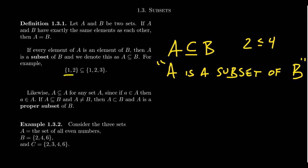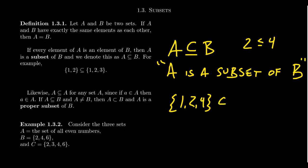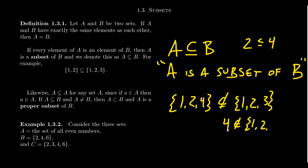Let's do an example. Let A be the set {1, 2} and B be the set {1, 2, 3}. Then A is a subset of B because every element of A belongs to B: 1 belongs to A and also to B, 2 belongs to A and also to B, and those are the only elements in A. On the other hand, the set {1, 2, 4} is not a subset of {1, 2, 3}, because 4 is in the first set but 4 is not in {1, 2, 3}. If a set contains anything that's not in the other set, it's not a subset.